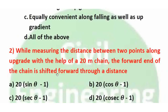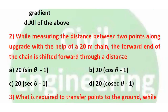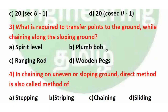Next question: While measuring the distance between two points along an upward slope, the forward end of the chain is shifted forward through a distance called the hypotenusal allowance. The measured chain length is 20 meters, so the allowance is 20(sec θ − 1). Option C, 20(sec θ − 1), is the correct answer. To transfer points to the ground while chaining along sloping ground, drop arrows (plumb bob) are required — the answer is Option B.